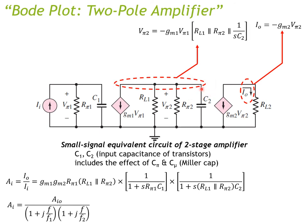We can relate v_{π2} to v_{π1} using the intermediate node. The voltage at that node is v_{π2}, and using Ohm's law with current −g_{m1}·v_{π1} flowing through the cluster of parallel impedances: R_{L1} parallel with R_{π2} and the impedance of C₂. Large R_{π2} equals R_B parallel with small r_{π2}.